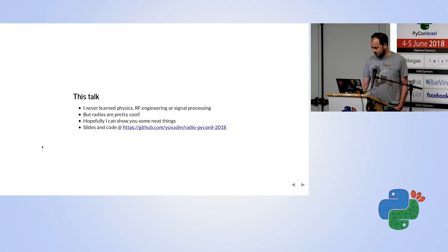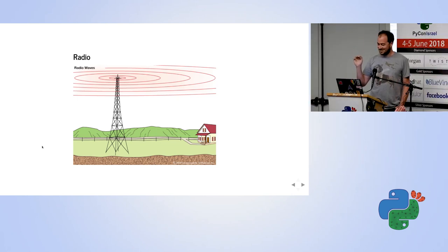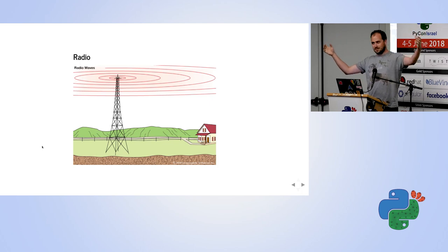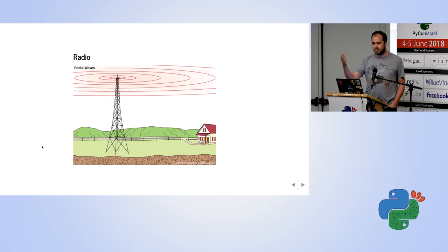The slides and code for this talk are going to be online on GitHub afterwards. So let's talk about what radio actually is. How many of you think you know what a radio more or less is, or how it works? Radio is essentially used for communication — we transmit radio waves in one place and receive them in another, and that gives us a communication path between two different locations. That communication can be a broadcast like a radio station, or a point-to-point communication.